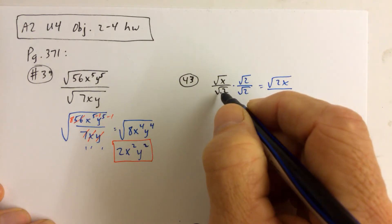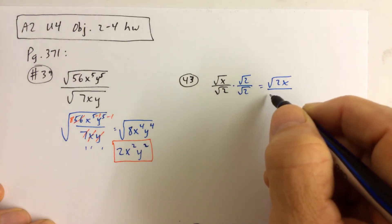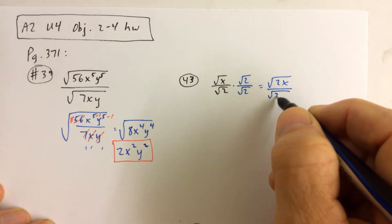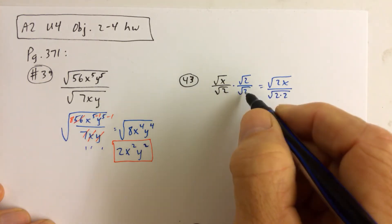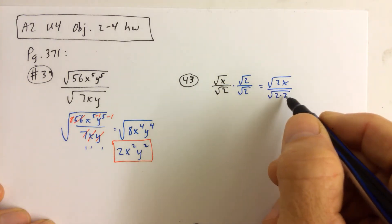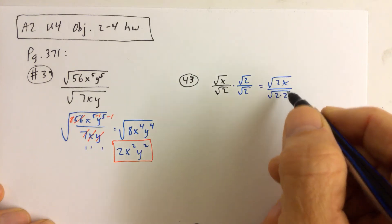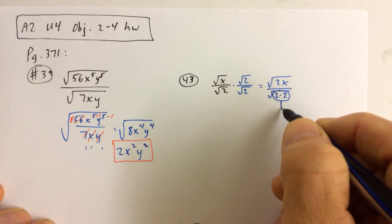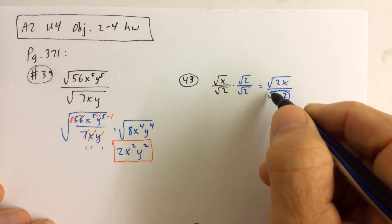And then in the denominator, we know when we multiply two radicals together, we can multiply both of what's under the radical together. So 2 times 2 under the radical. And that's why we do that,